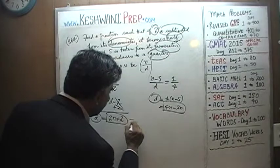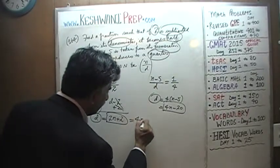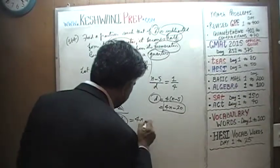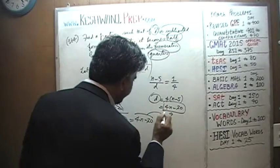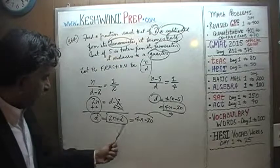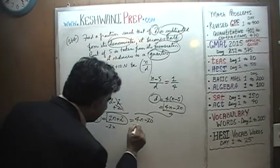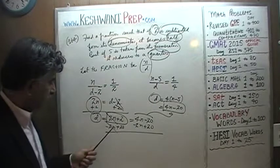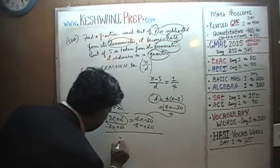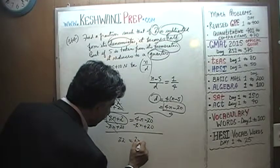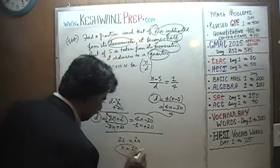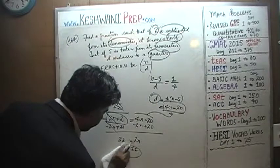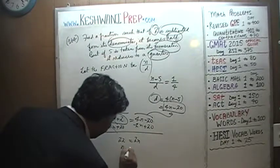Because they both represent d, let's equate them. This quantity, 2n plus 2, has to equal 4n minus 20. Let's subtract 2n from both sides and add 20 to both sides. The 2n terms cancel out, and we end up with 2 plus 20, which is 22, equaling 4n minus 2n, which is 2n. That means n must be 11.